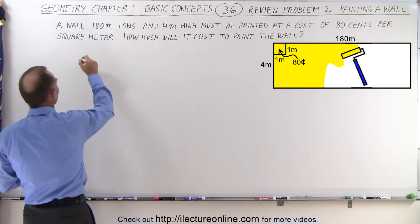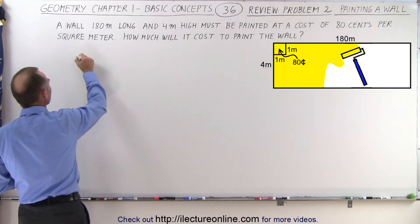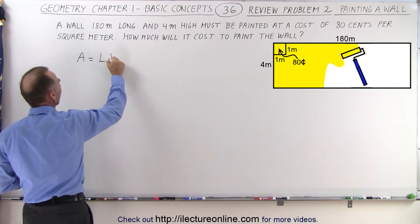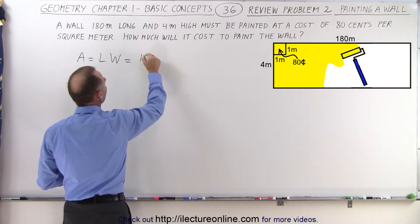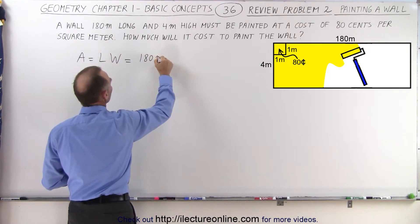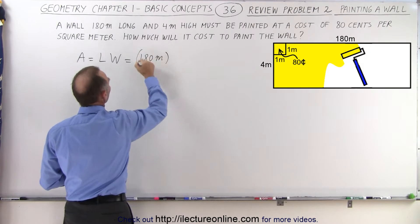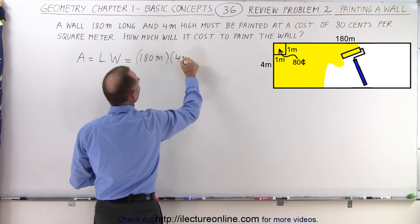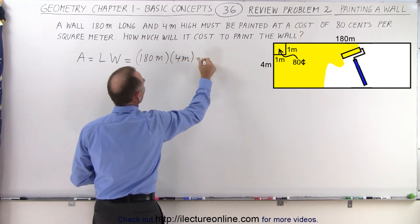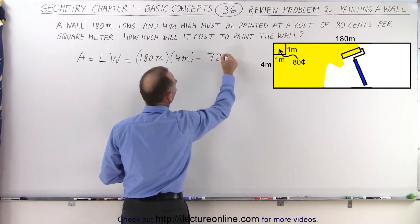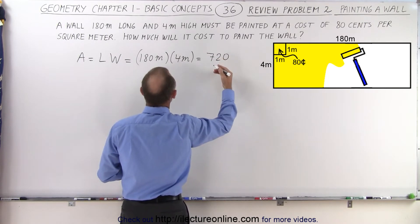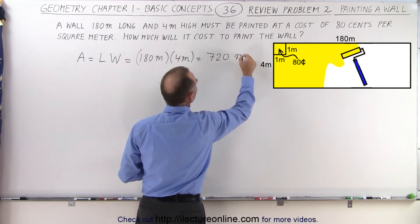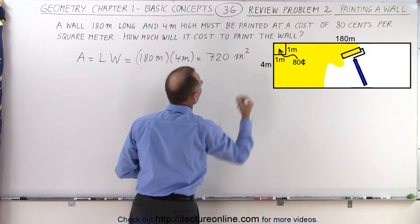Alright, let's go ahead and find the area of the wall. The area is going to be the length times the width. The length is 180 meters and the width is 4 meters. So that means the total surface area of the wall is 720 meters squared.